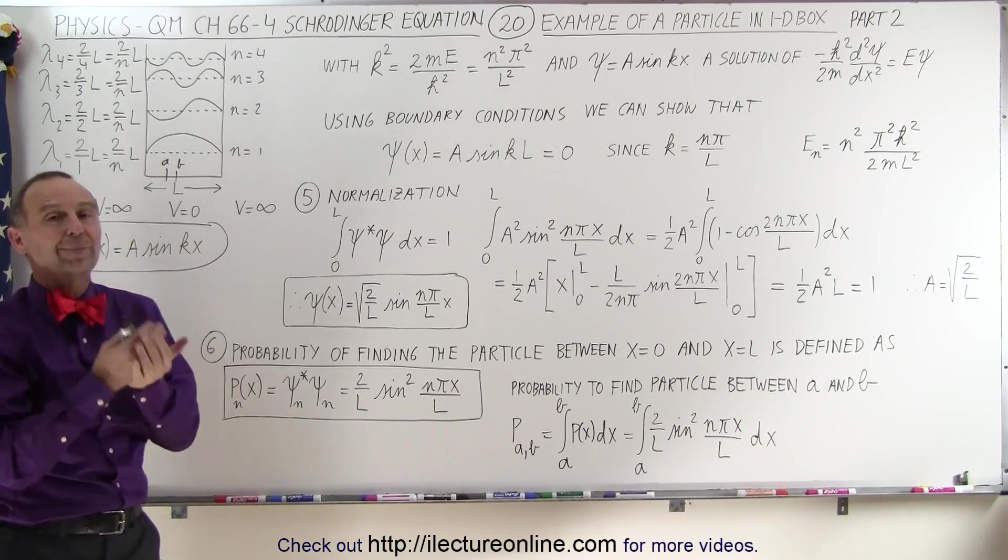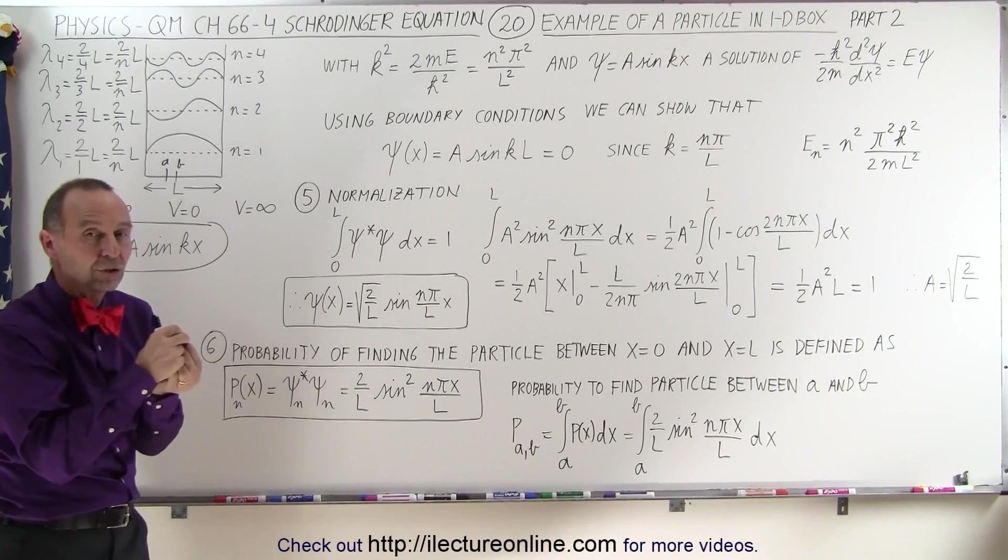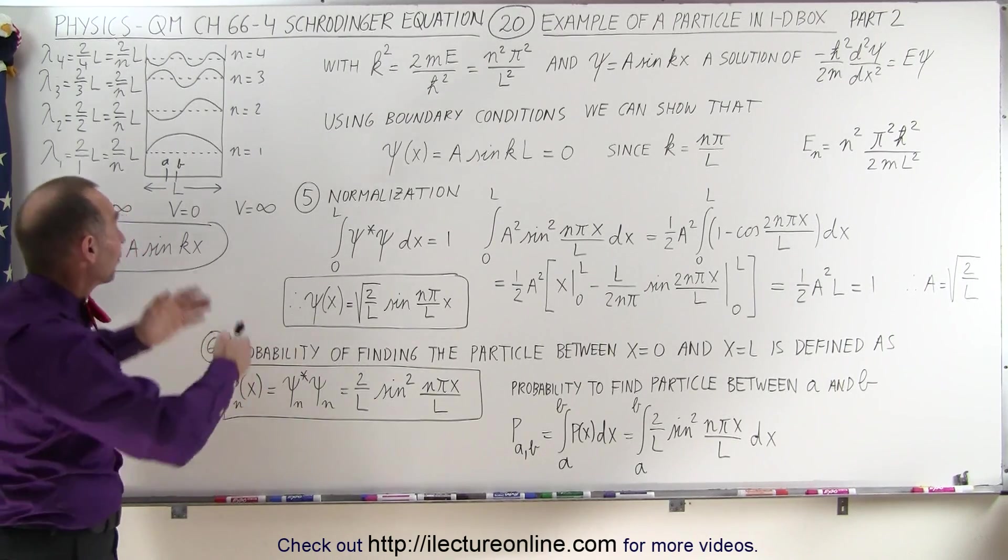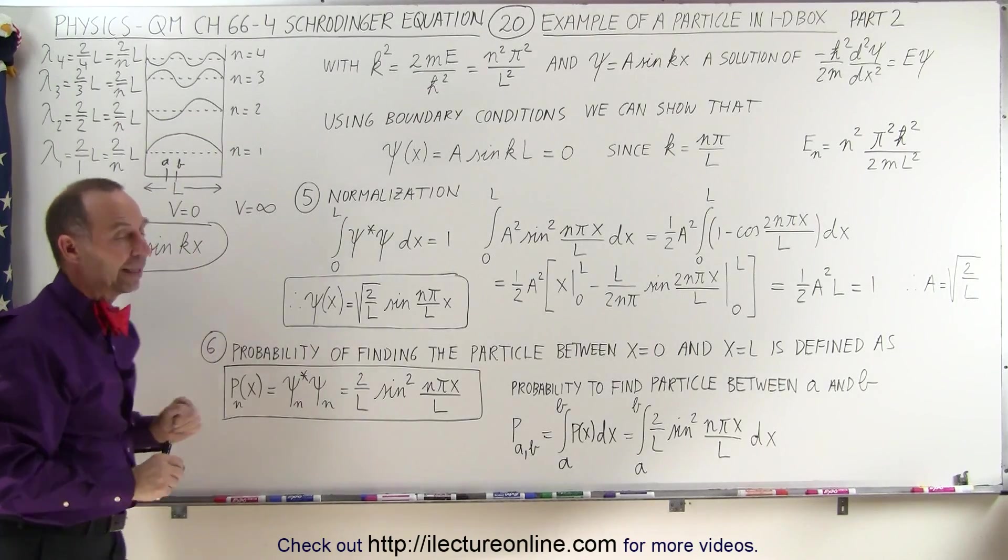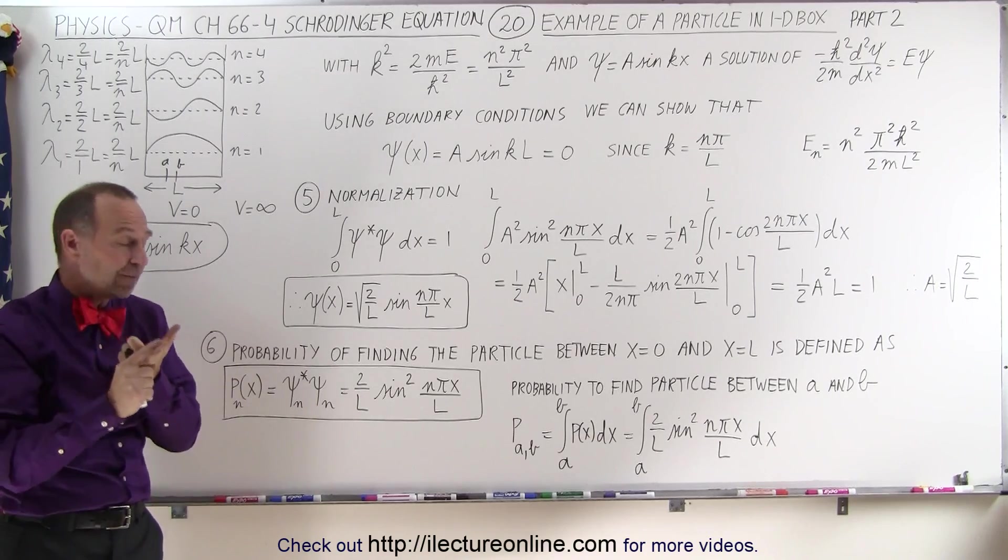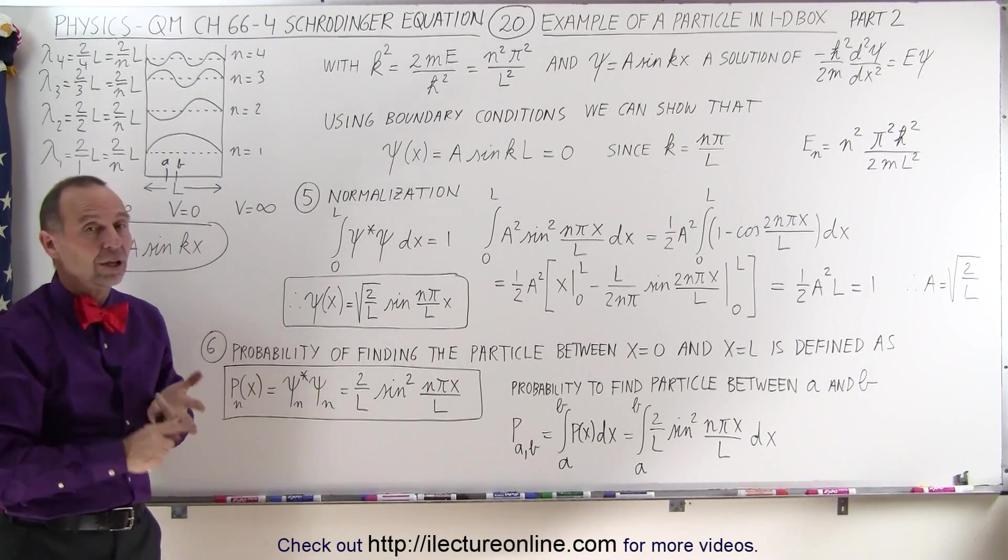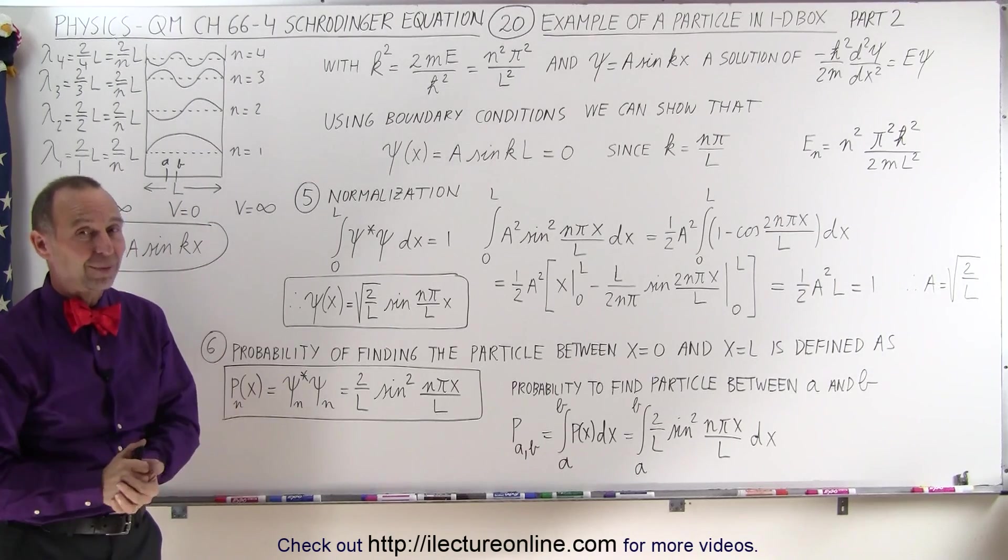I will have to show you an example of how that's done. But here now we have completed the six steps of how to utilize the Schrödinger equation to calculate, using the physical conditions of the situation, the boundary conditions and everything else. We have been able to show you how to use the six steps to come up with the wave equation and the probability function of a single particle in a box. And that's how it's done.